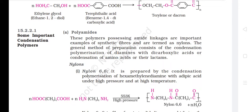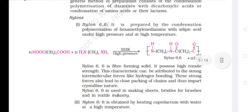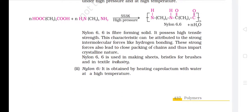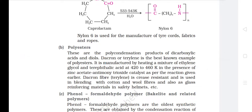Some Important Condensation Polymers — A. Polyamides. These polymers possessing amide linkages are important examples of synthetic fibers and are termed nylons. The general method of preparation involves condensation polymerization of diamines with dicarboxylic acids, or condensation of amino acids or their lactams. First, Nylon-66: prepared by condensation polymerization of hexamethylene diamine with adipic acid under high pressure and at high temperature. It is a fiber-forming solid with high tensile strength, attributed to strong intermolecular hydrogen bonding, which also leads to close packing of chains and crystalline nature. Nylon-66 is used in making sheets, bristles for brushes and in the textile industry. Second, Nylon-6: obtained by heating caprolactam with water at high temperature. It is used for the manufacture of tire cords, fabrics and ropes.